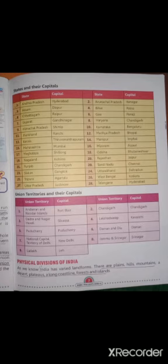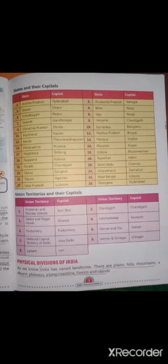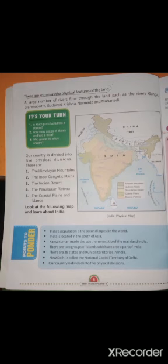Next is the physical division of India. Physical division means features that we can see with our eyes and touch. As we know, India has varied landforms — there are plains, hills, mountains, rivers, deserts, plateaus, coastlines, forests, and islands. These are the notable physical features of India, known as its physical characteristics or bhotik visheshta.